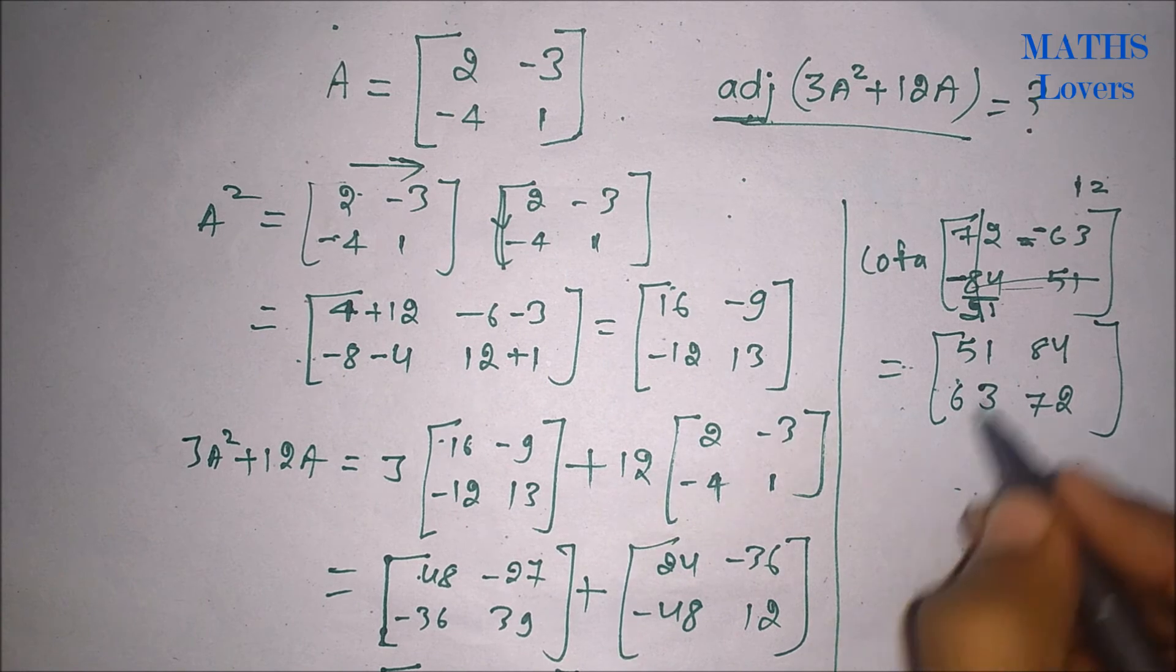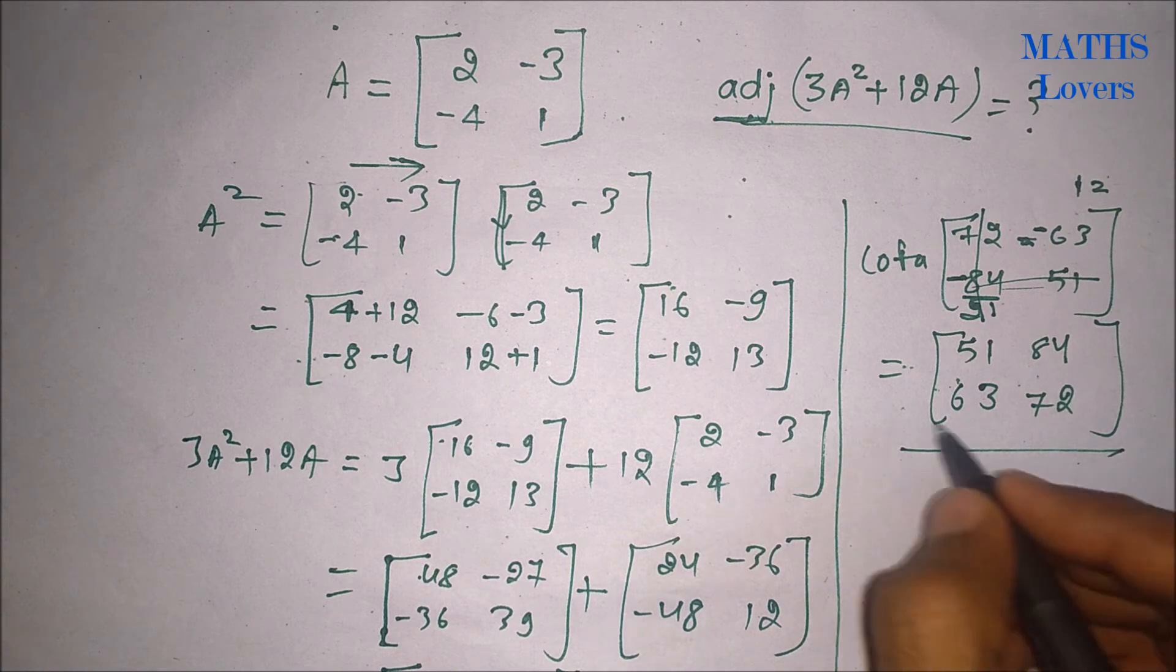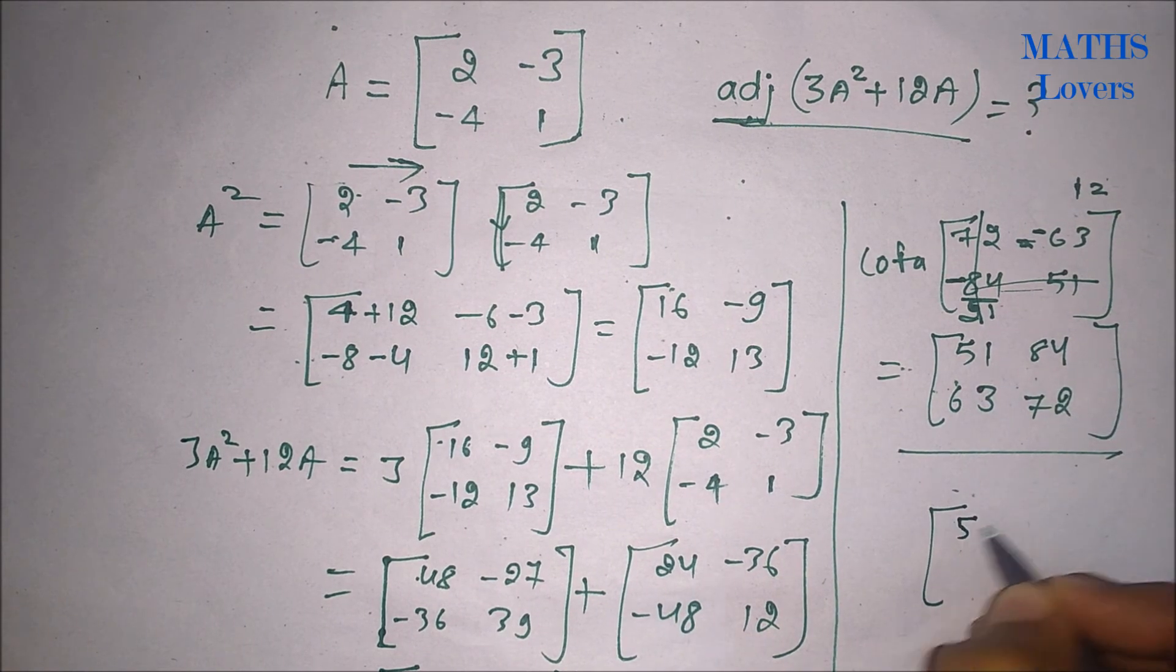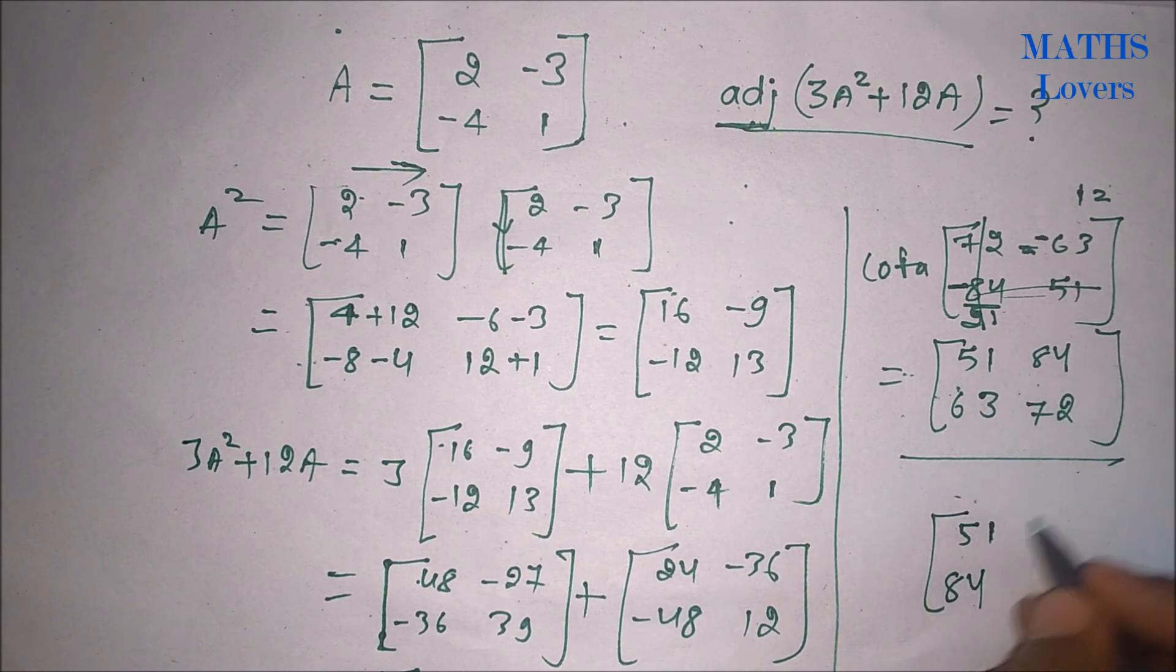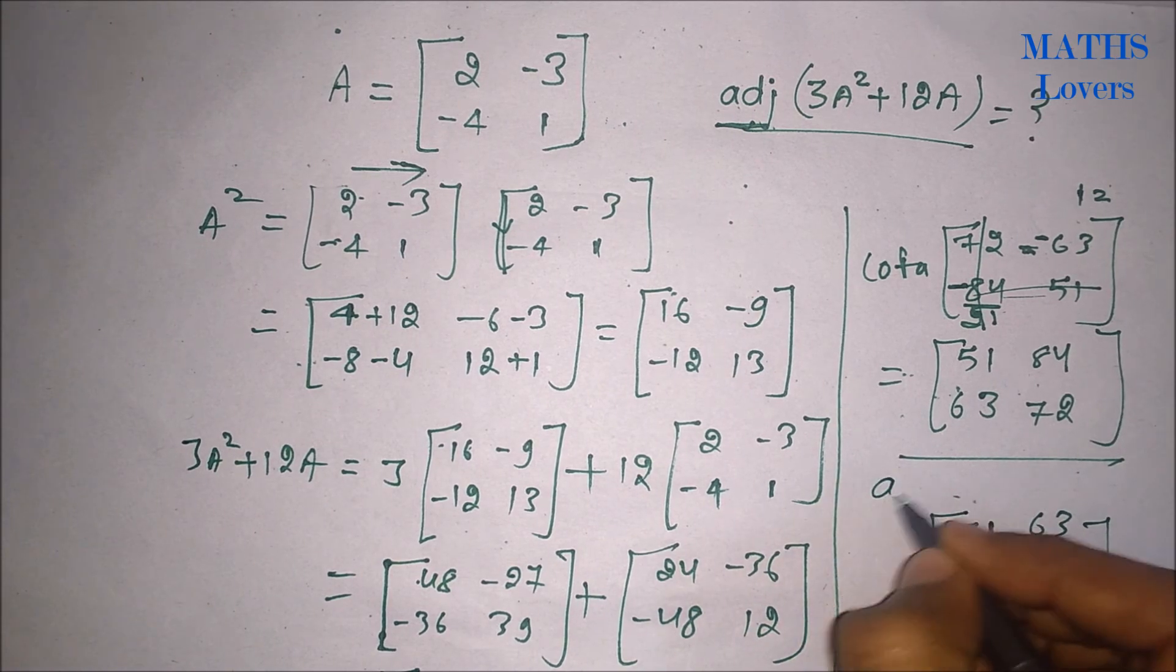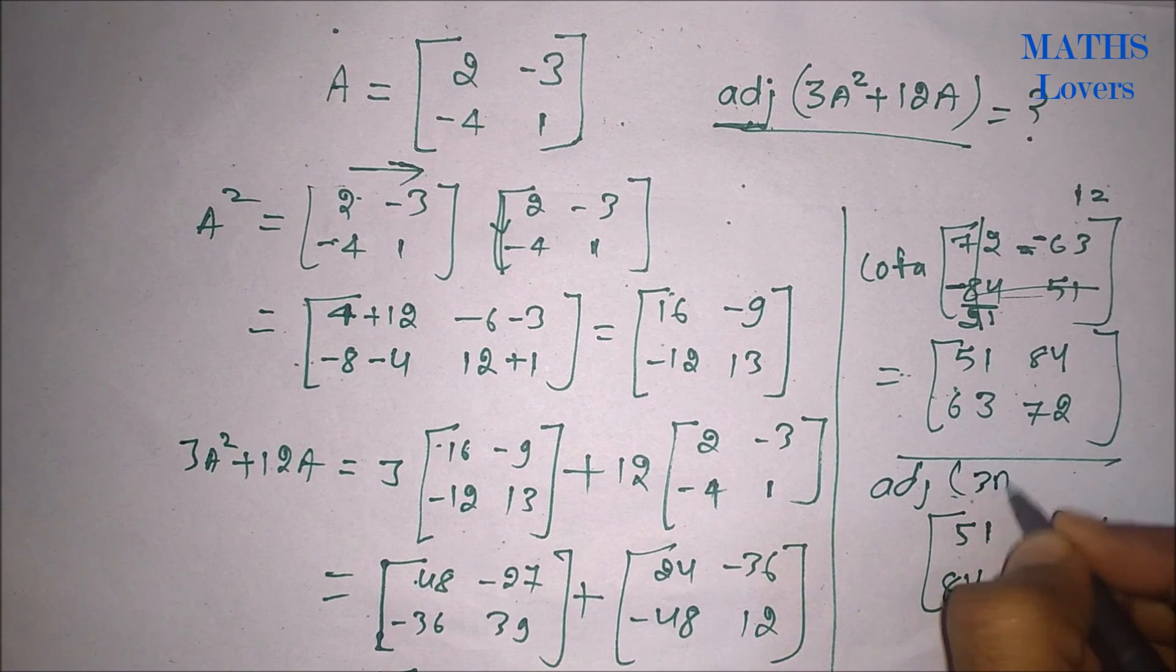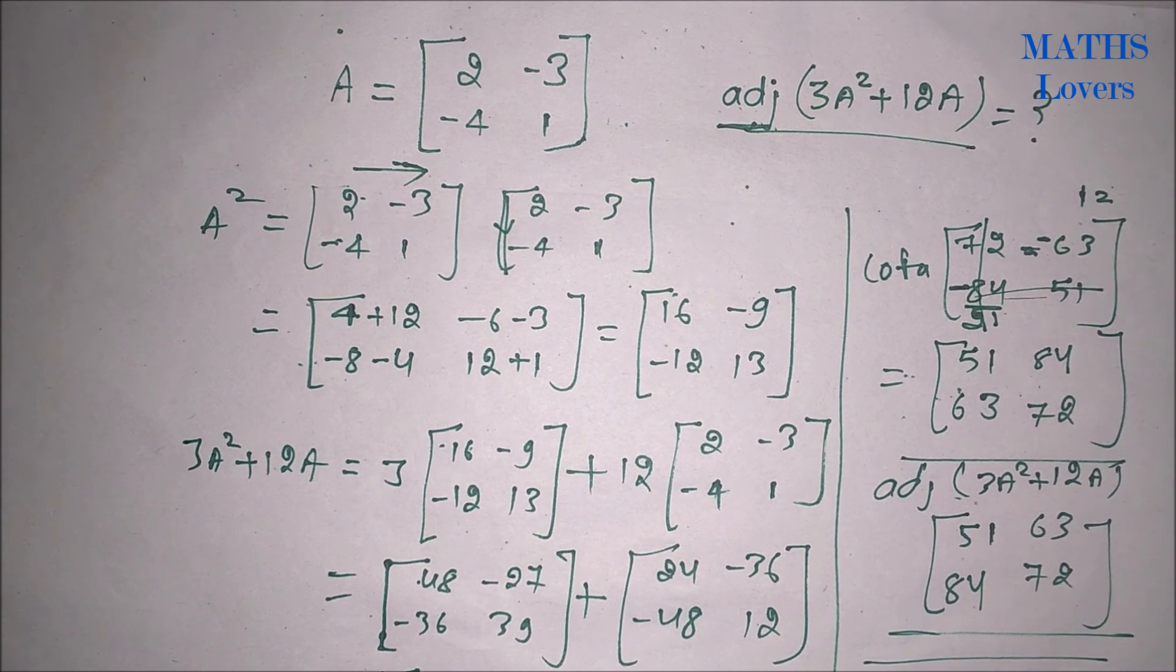Now we will take transpose of this. That means row is changing into column and column is changing into row. So transpose of it will be 51, 84. This is row so it will become column, and this is 63 and 72. So this is our adjoint of 3A squared plus 12A. So B is our answer.